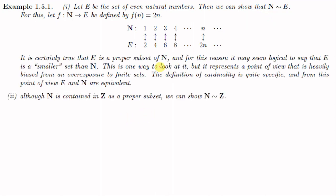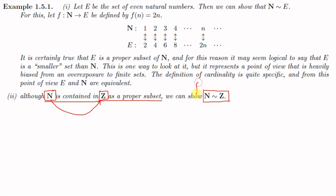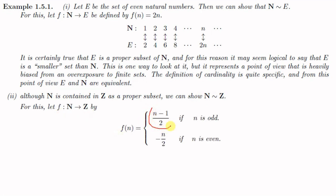Now, although N is contained in Z as a proper subset, we show that N ~ Z. N is the set of natural numbers and Z is the set of integers, so N is a proper subset of Z. To show N and Z have the same cardinality, we define a function f from N to Z by f(n) = (n−1)/2 if n is odd, and f(n) = −n/2 if n is even.